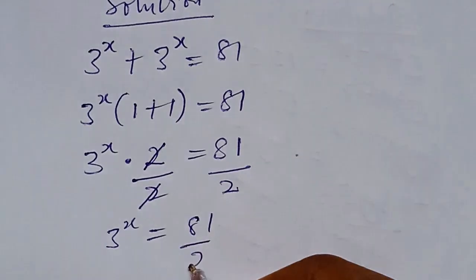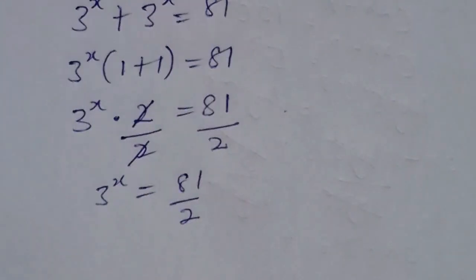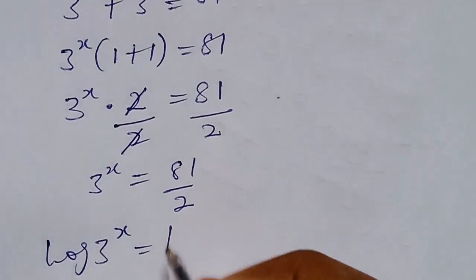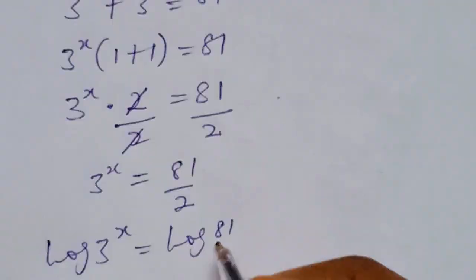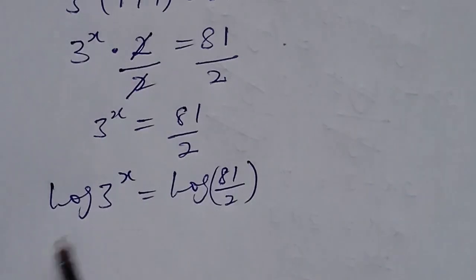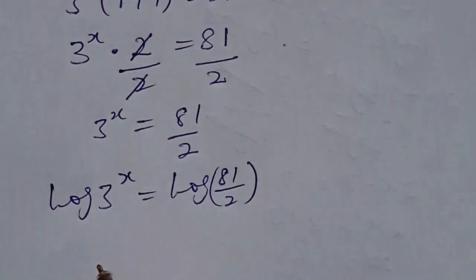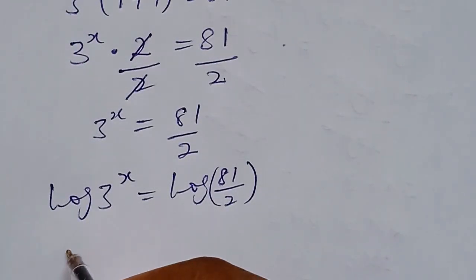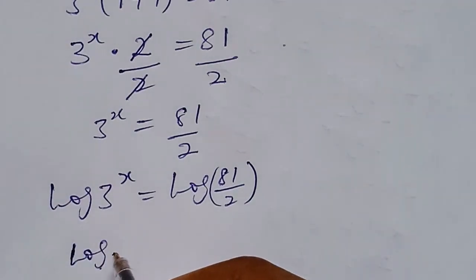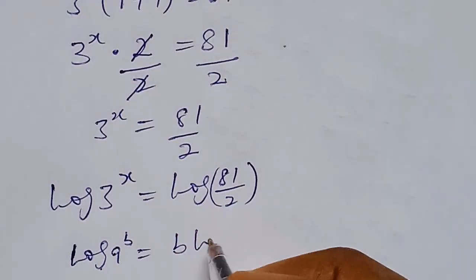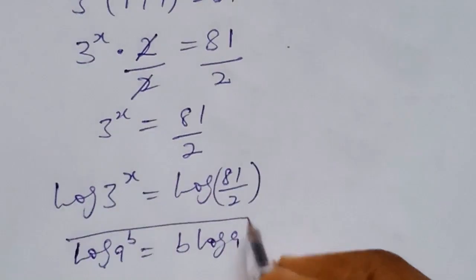From here we take the log of both sides: log of 3^x equals log of 81 over 2. We apply the logarithmic identity — if we have log of a^b, we can write it as b times log of a.